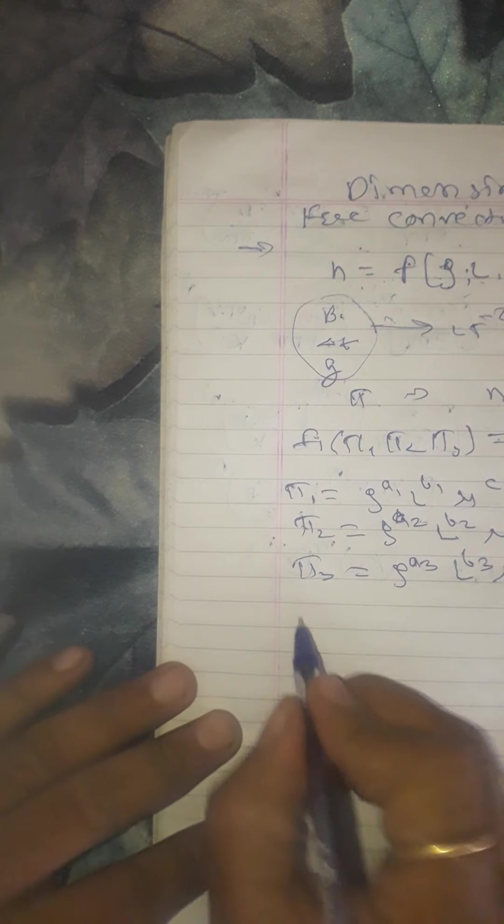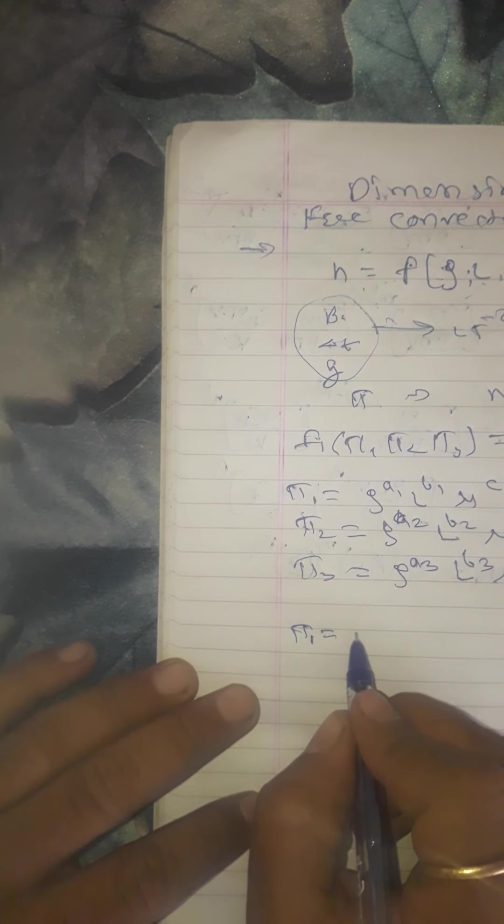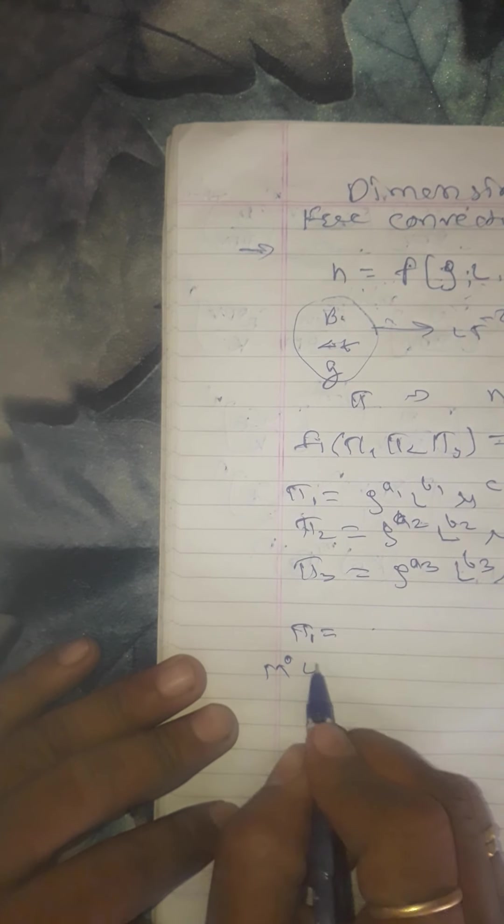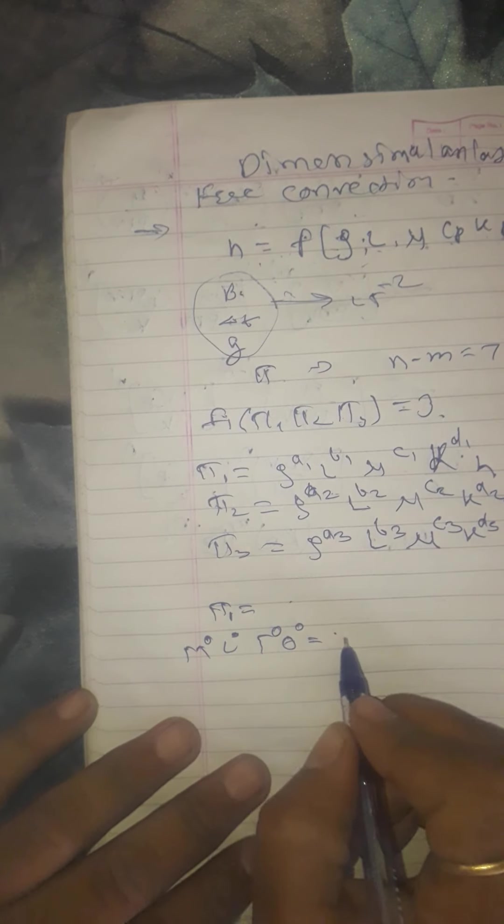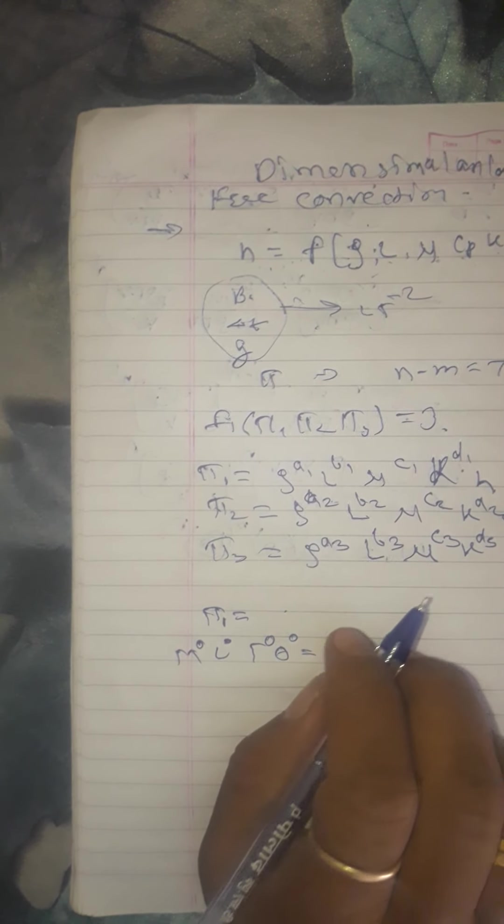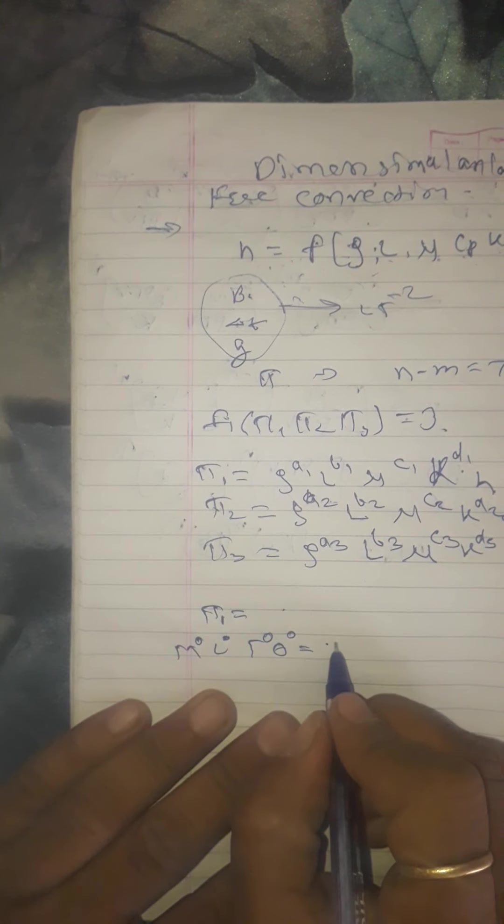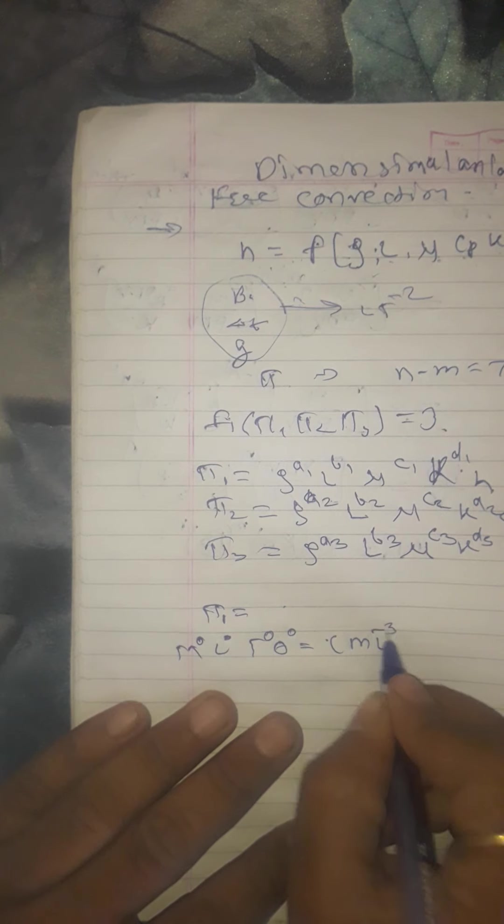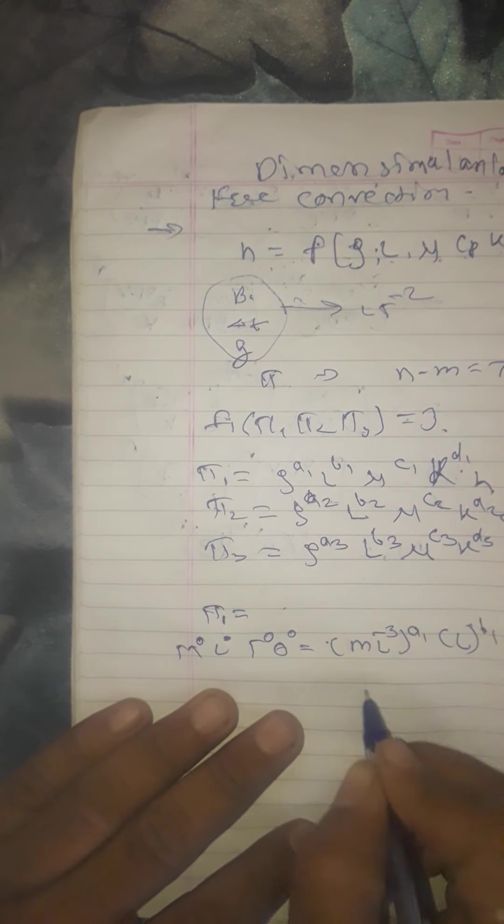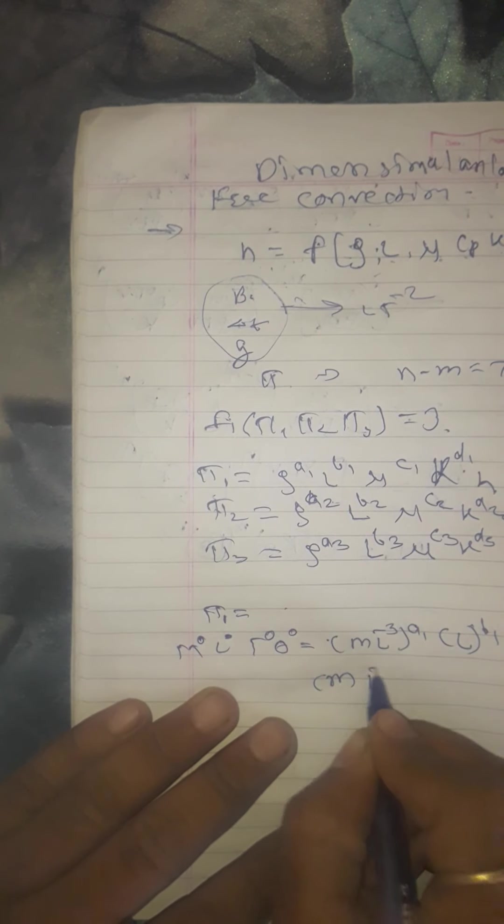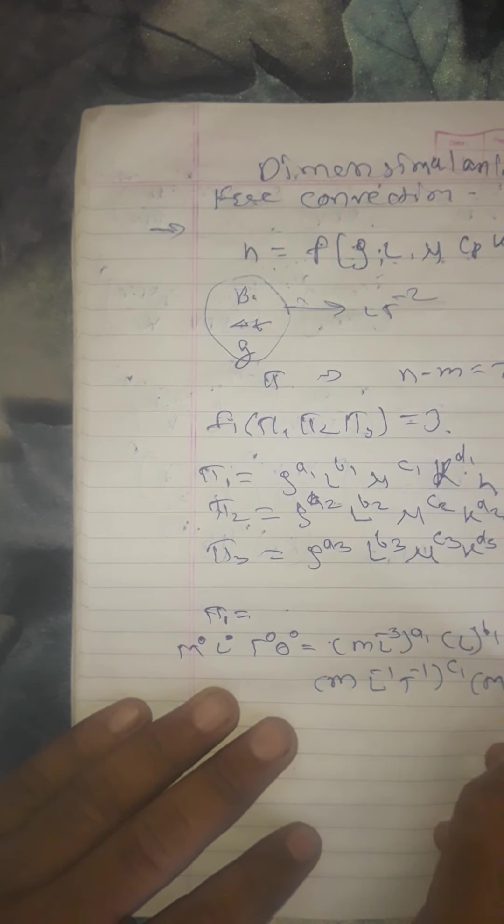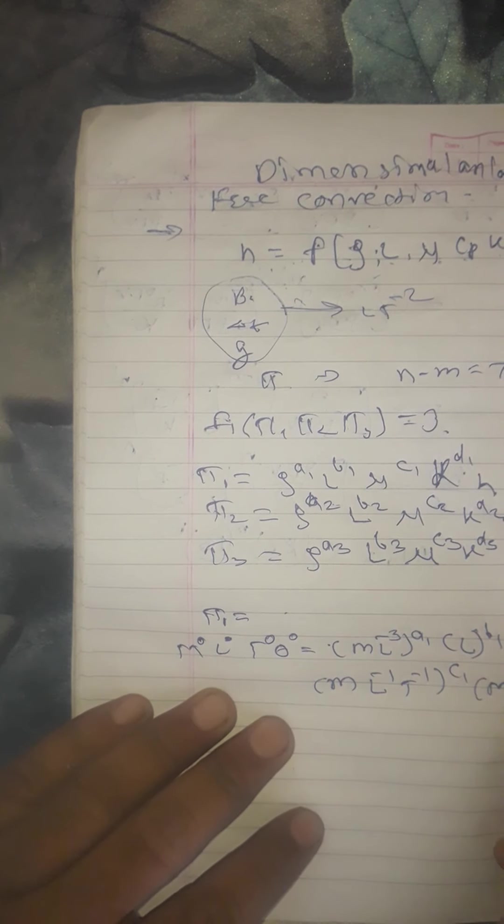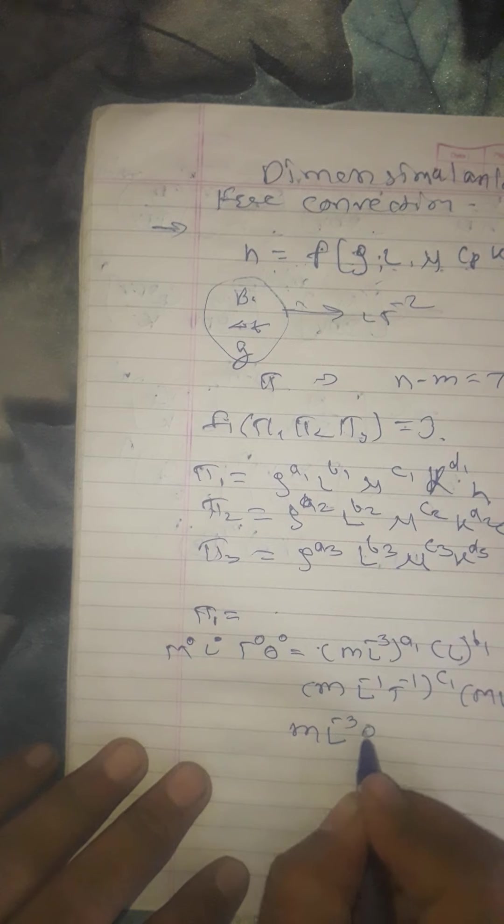So by this we have to find out the pi 1 term. Similar for the pi 1 term, that is left hand side M0 L0 T0 theta 0 which equals, I will write here. Now you can refer RK Rajput book. See here M L minus 3 A1 L B1 M L minus 1 t minus 1 c1.